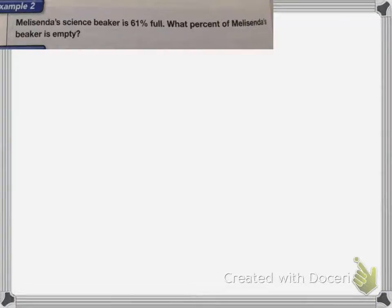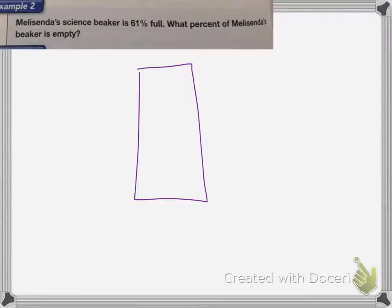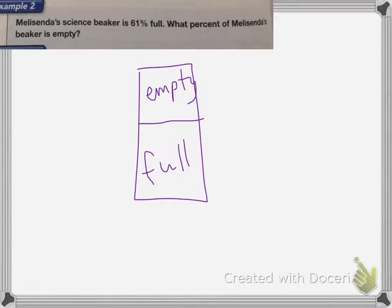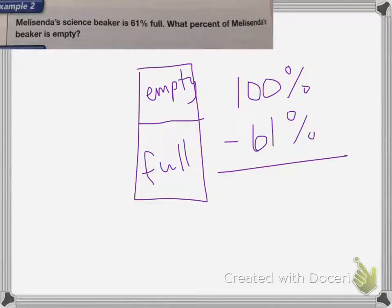Melisenda's science beaker is 61% full. What percent of Melisenda's beaker is empty? If I were to draw it, it's just a little bit over half full — this is how much was full, and this is the empty part. For a percent, my whole is 100%. So I subtract 61%, and my answer is 39% of the beaker is empty.